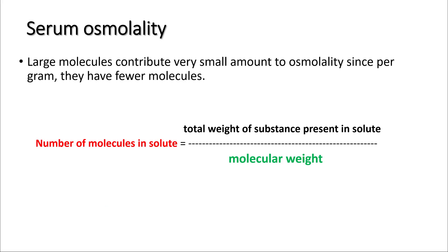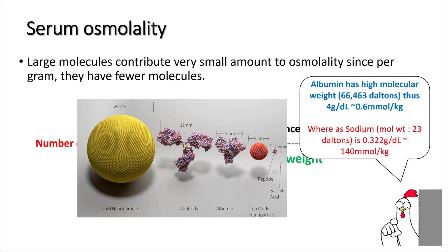One important thing to remember is that larger molecules contribute a smaller amount to osmolality since per gram they have fewer molecules. The number of molecules in a solute equals the weight of the substance divided by its molecular weight. For example, albumin has a molecular weight of 66,000 and is present at 4 grams per deciliter in serum, contributing only 0.6 millimoles per kilogram. Sodium, a much smaller molecule with molecular weight of 23, is present at only 0.3 grams per dL yet contributes 140 millimoles to the solution.